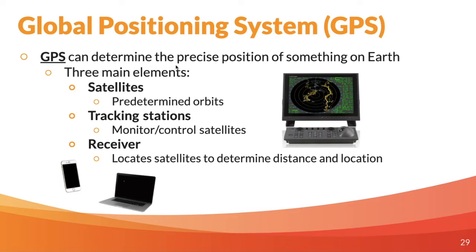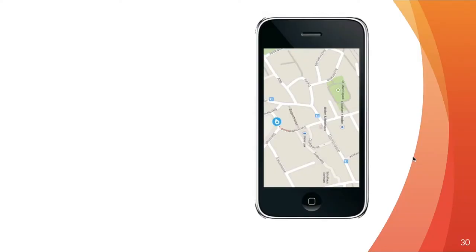GPS — global positioning system — can determine the precise position of something on the surface of the Earth, but you need three elements. You need satellites in predetermined orbits floating around the Earth sending information back down. You need tracking stations to monitor and control those satellites. Then you need a receiver — your phone, your computer — that can locate satellites and connect with enough of them to determine a specific distance or location. When you go into Google Maps and look up the nearest Chipotle, distance and location is essentially what you want to know, and you are using all of these elements.